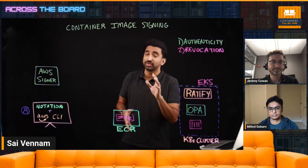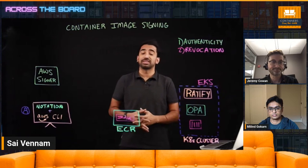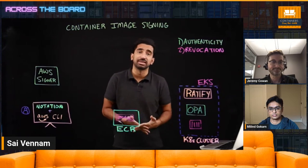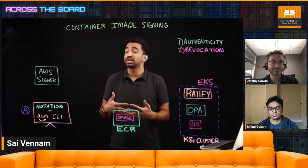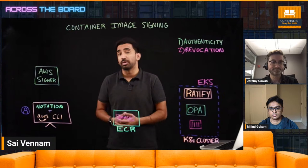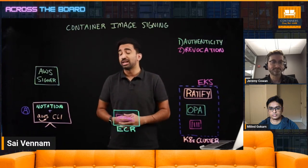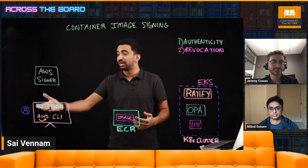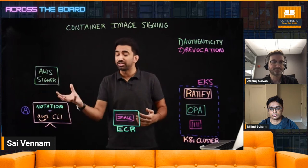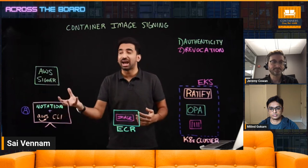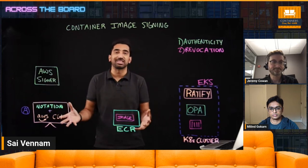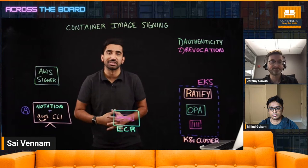Millen has a demo for us that will show how we can sign images and how Signer and ECR support that flow. What does the developer on their local machine have to do to start the process of signing an image?